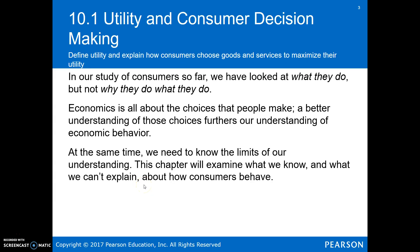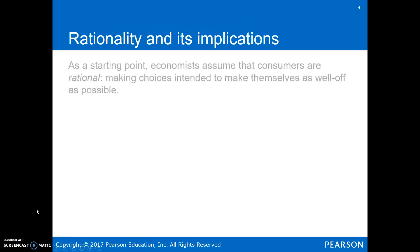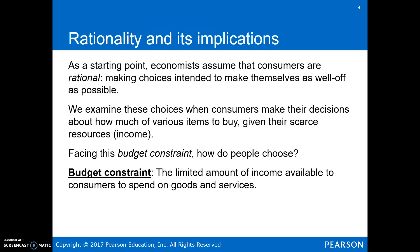We've introduced the idea of supply and demand. In this chapter, we're going to zoom in on the demand side and take a look at why consumers do what they do. We have a review here of some of the things we've introduced before. Rationality — people are making choices in their own self-interest using all their available information to make themselves as well off as possible. We also introduced scarcity and trade-offs, which shows up in our budget constraint. With a limited amount of income available, how do consumers spend their money on goods and services?